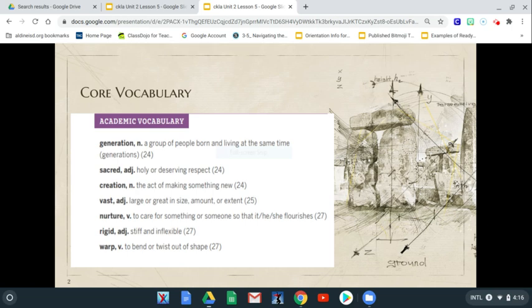Your next vocabulary word is vast, which is an adjective. It means large or great in size, amount, or extent. The ocean and how much water—vast amounts of water in the ocean. It goes on and on. It's a large, great amount of water. So that's vast.